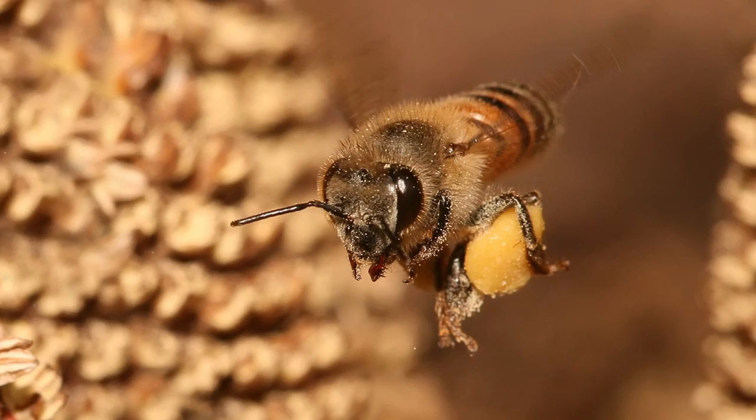The United States alone relies on the domesticated European honeybee to pollinate one-third of its food supply. We're talking apples, peaches, almonds, lettuce, broccoli, cranberries, squash, melons, blueberries, and more. And I can eat like at least 15% of that, so please don't take it away from me.